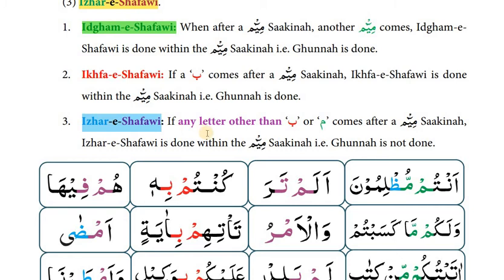Let me give you examples of Ikhfa Shafawi. The third case is Izhaar Shafawi: if any letter other than Ba comes after a Meem Sakinah, Izhaar Shafawi is done — ghunnah is not done. If any of the other twenty-seven letters come, other than Ba or Meem, then Izhaar Shafawi will be done. Examples: 'Adam tera', 'hum fiha wal amru' — these are examples of Izhaar Shafawi.